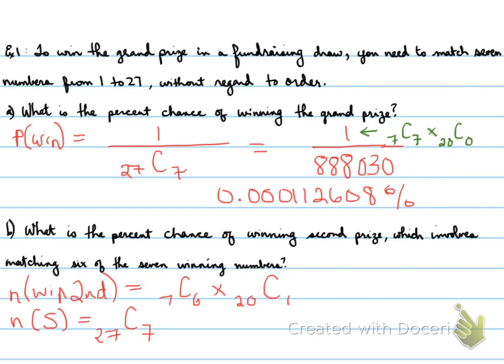Once we calculate all of this, I want you to understand now how the 1 came about. That came about by saying we have 7 numbers. We choose the 7 numbers we want. And from the remaining 20, we choose 0. That's where the 1 came from in the previous question.